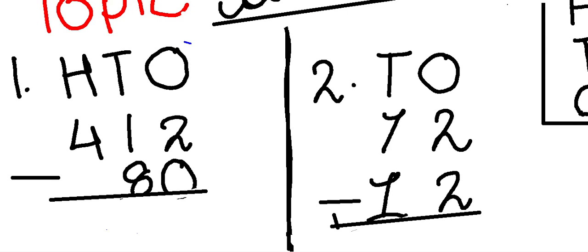Here we have 412 minus 80. We have 1 column here and under it is 2, 0. When you have 2 chocolates, you don't give anything to anyone, so you are left with 2 chocolates.